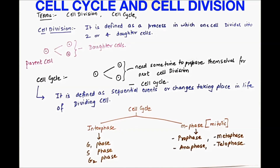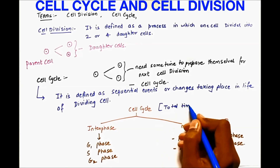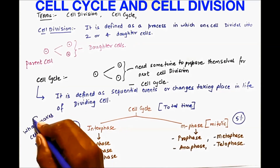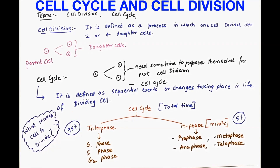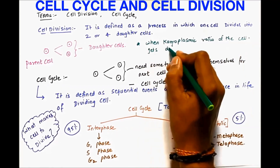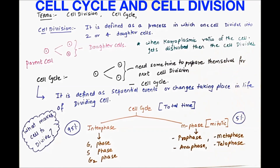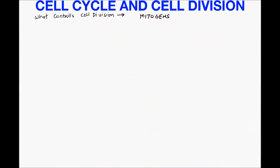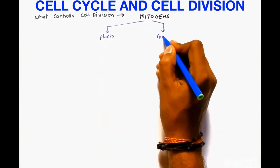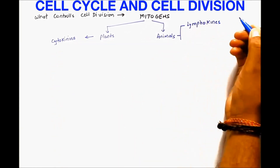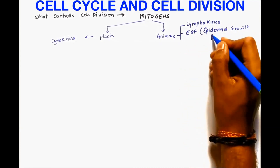In the cell cycle, the most important thing to understand is the total time. 95% of the time is taken by interphase and 5% by the M phase. What makes the cell divide? When the karyoplasmic ratio of the cell gets disturbed, the cell divides. So what controls cell division? There is a special chemical called mitogens in plants as well as in animals.